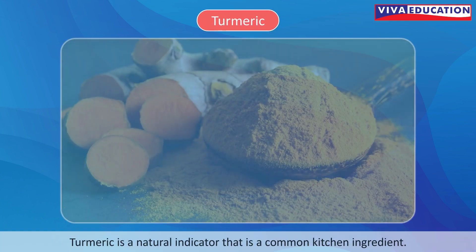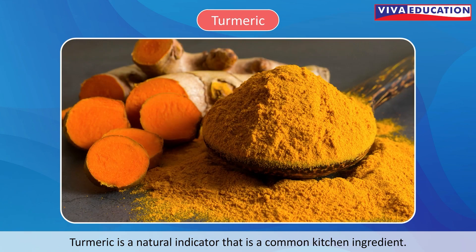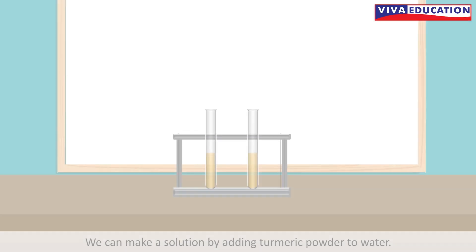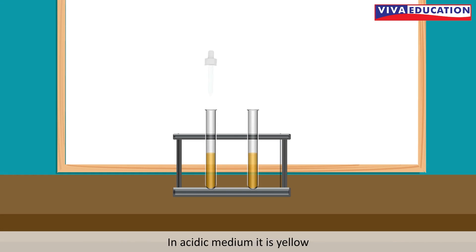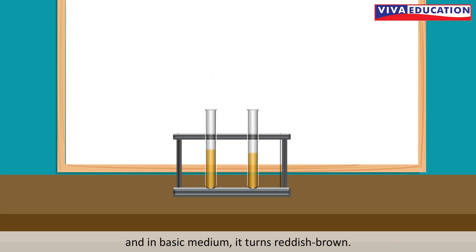Turmeric is a natural indicator that is a common kitchen ingredient. We can make a solution by adding turmeric powder to water. In acidic medium it is yellow, and in basic medium it turns reddish brown.